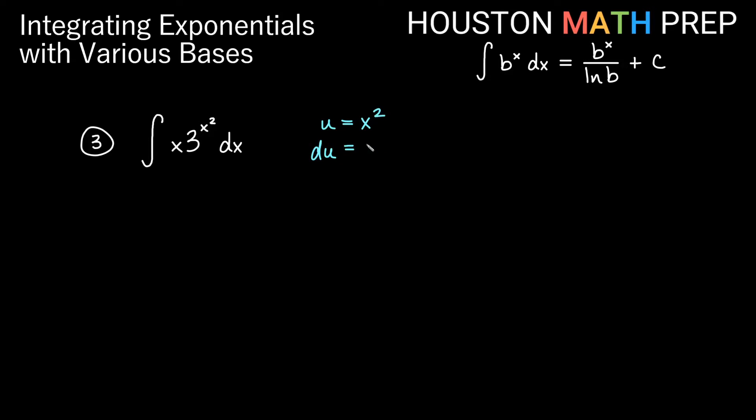If I do that, then du, the derivative of that, is actually 2x dx. And think about what we have now. This exponent becomes u, so I get 3 to the u there. But here I have x dx is the rest of that. Here I have 2x dx, so to find what x dx is, I could divide this by 2 on both sides. That gives me 1 half du is exactly x dx, and then I know that this x dx gets replaced with 1 half du.